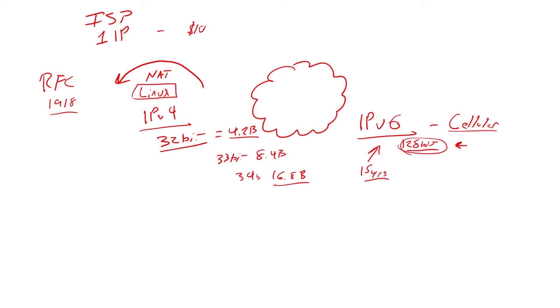The number is actually 340 undecillion. If you put your calculator into scientific mode and do 2 to the 128th, you'll see the number. It's obscenely large. The idea here is that there's unique IP addressing for everything.